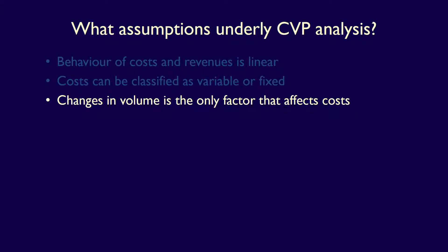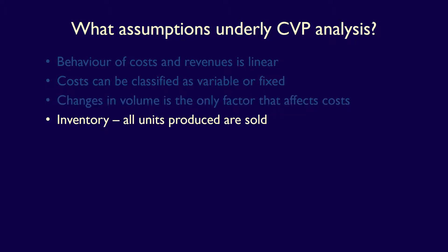Changes in volume are the only factor that affect costs. Inventory levels remain constant and all units produced are sold. We know that companies generally retain some level of finished goods inventory to ensure appropriate stock is available for customer orders.